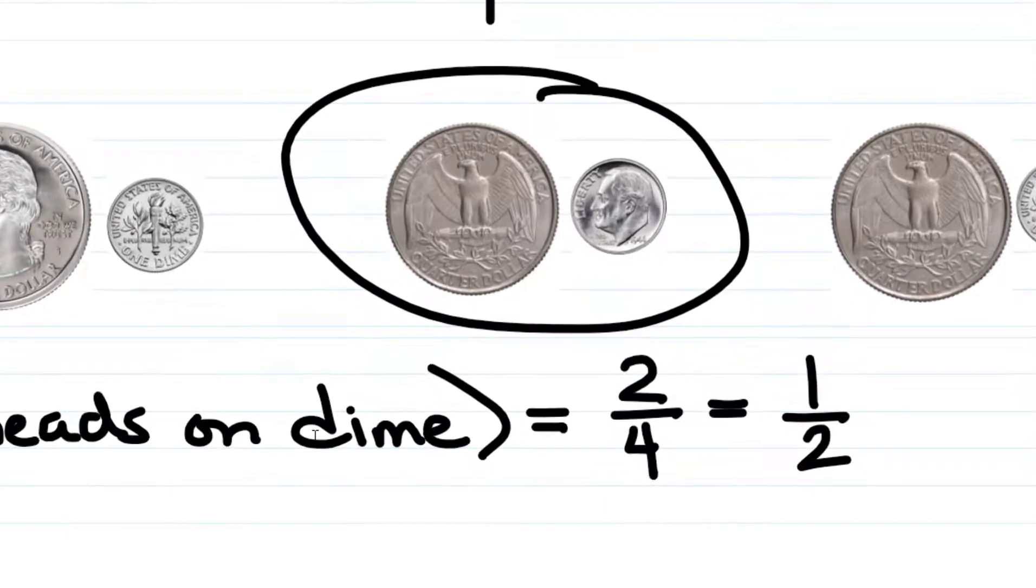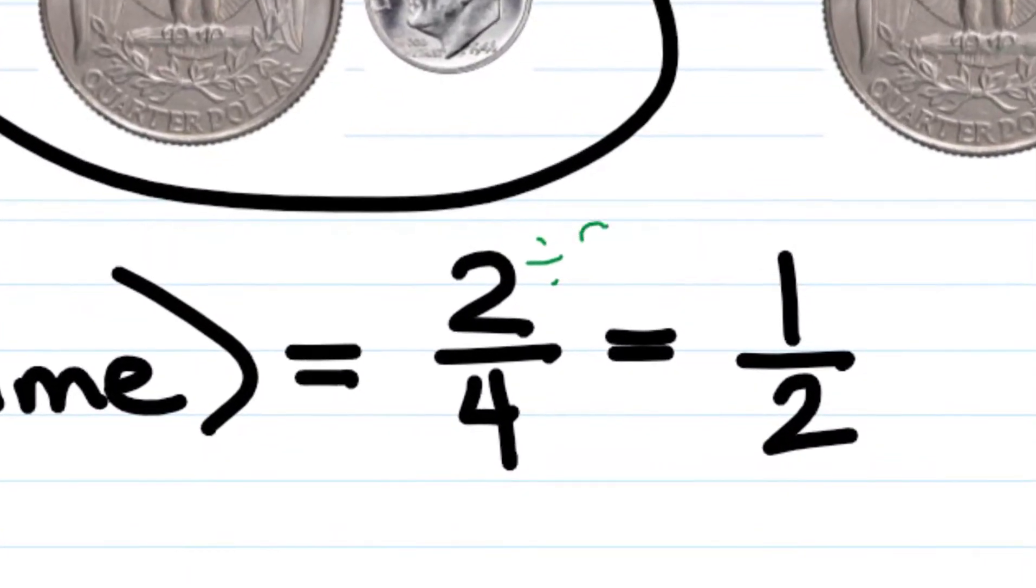If you've forgotten how to reduce fractions, you can always reduce by dividing the top and the bottom by the same number. That will result in an equivalent fraction.